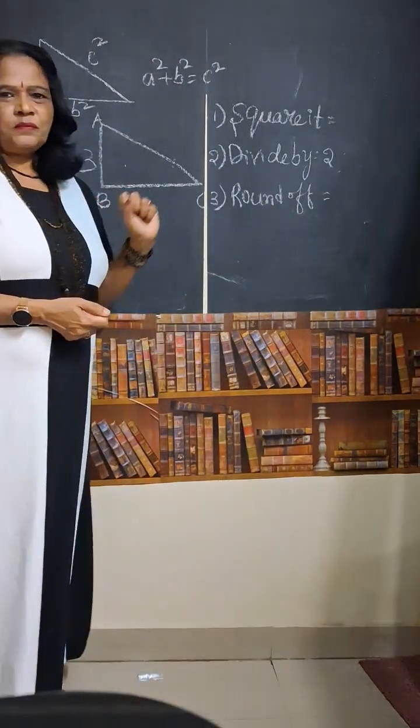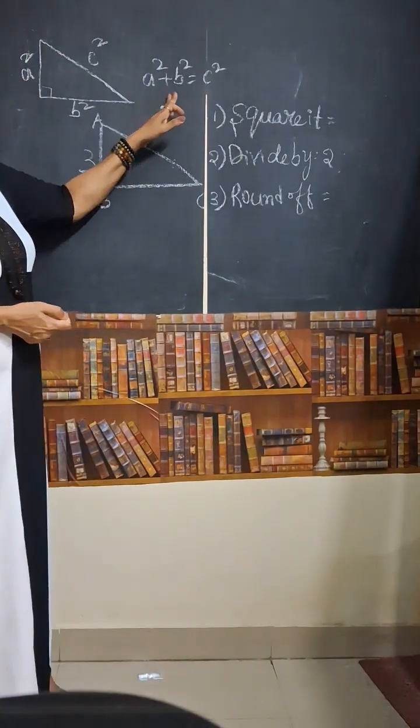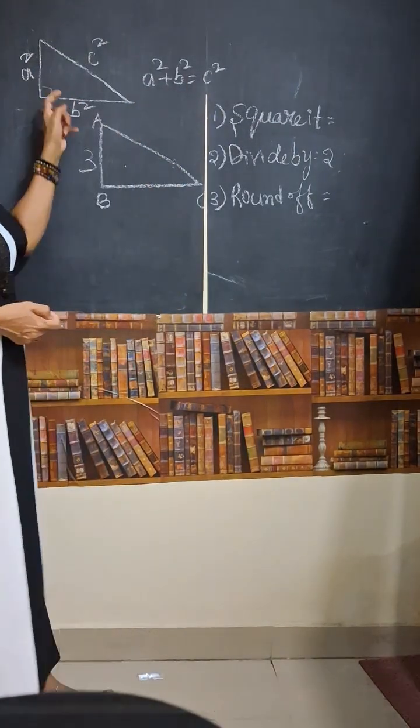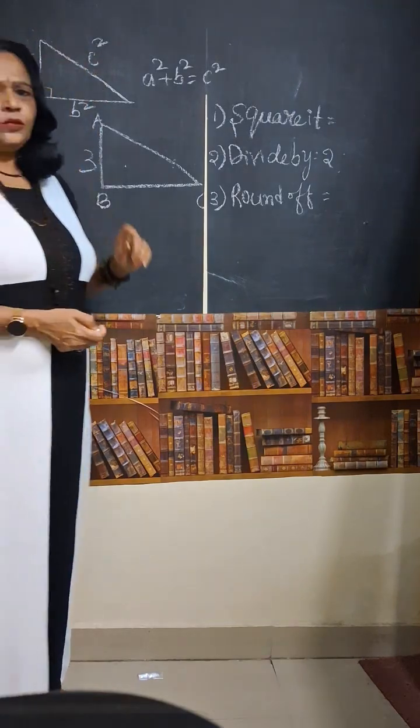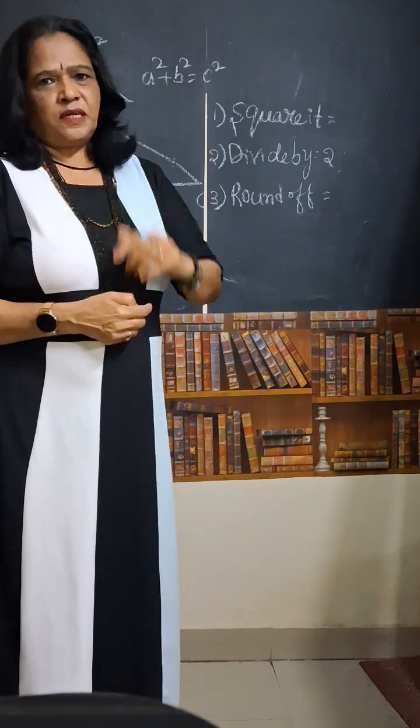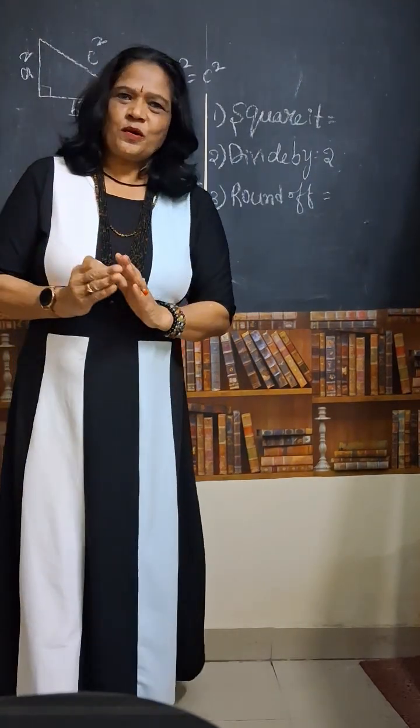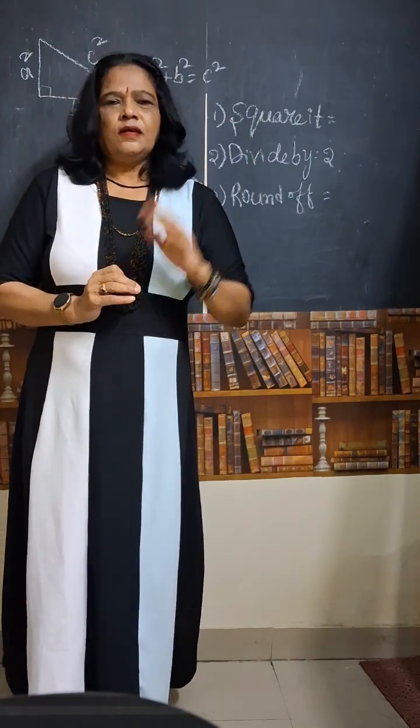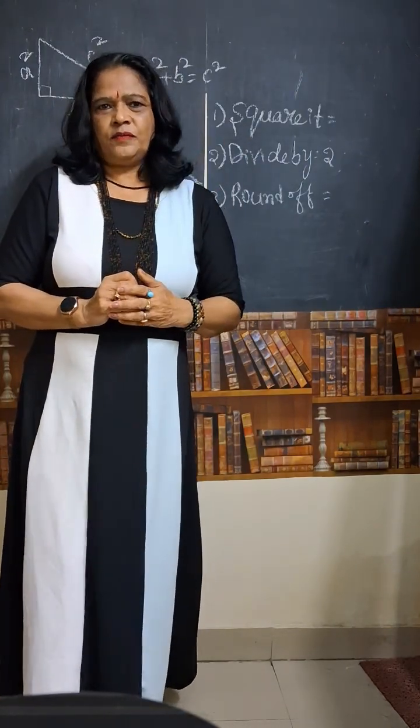So what is Pythagoras theorem? A square plus B square is equal to C square. Means sum of two sides of a right angle triangle is equal to the other side that is the hypotenuse. So in this school what you have learned? When the two sides of the triangle is given, how to find the other side? Right?